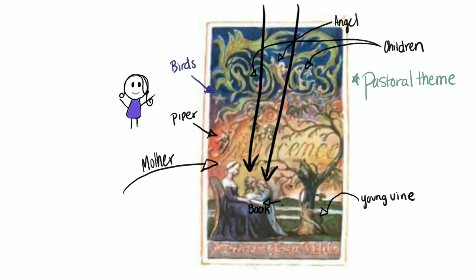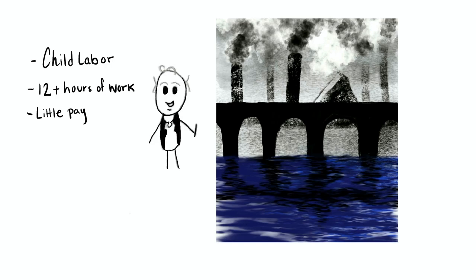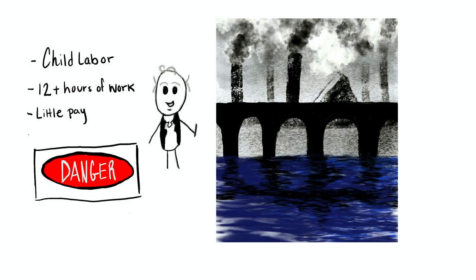Blake was writing the Songs of Innocence poems during the time of the Industrial Revolution. There was a lot of child labor where these children would work for over 12 hours and receive little pay, especially in comparison to an adult. It was very dangerous for these children to be working around machines. The children would often be used to help get stuck objects out of these machines, which would result in them being hurt and sometimes even being killed. This sparked some of the ideas found in the poems.